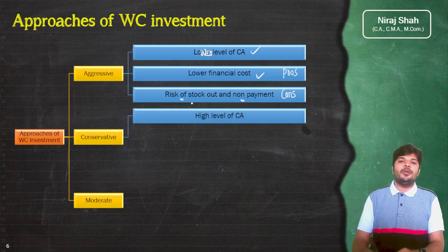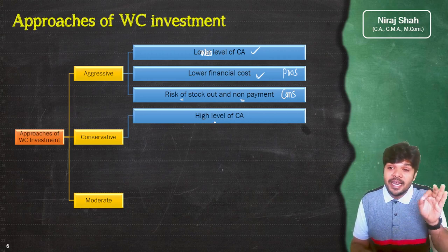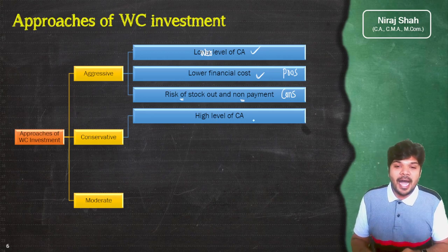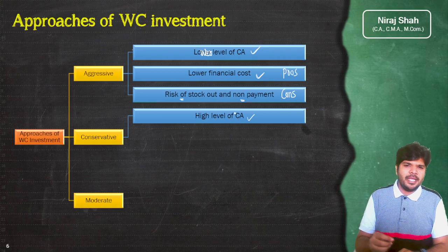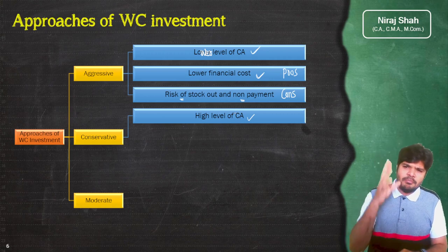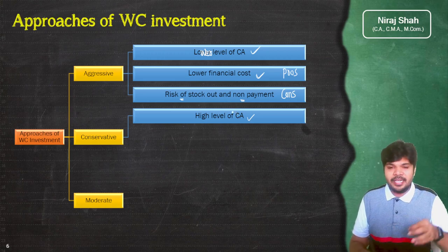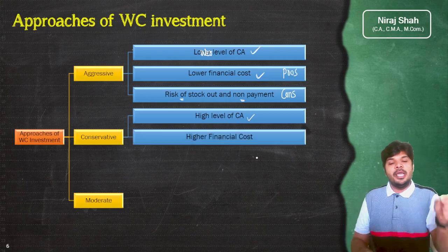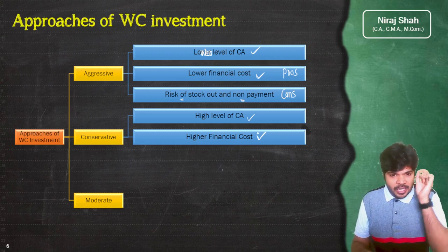Conservative policy में आप बिल्कुल risk नहीं लेने का सोचते हो। High level of current assets रखते हो — stock भी अच्छा खासा अपनी shop में रखते हो, debtors को generous credit देते हो। Business में कई बार जरूरत से ज्यादा current assets रखते हो। इसका नुकसान यह है कि आपको बहुत ज्यादा high financial cost लग सकती है।